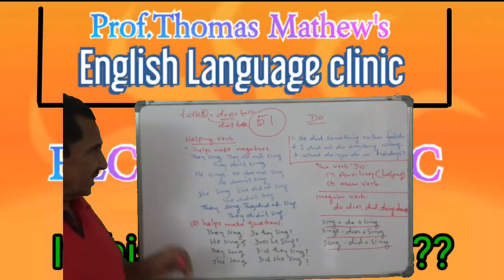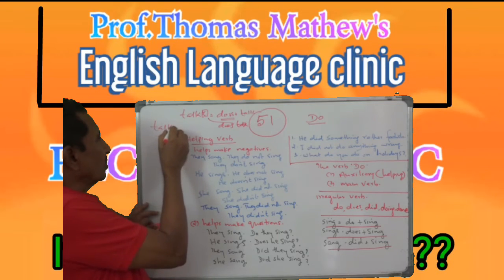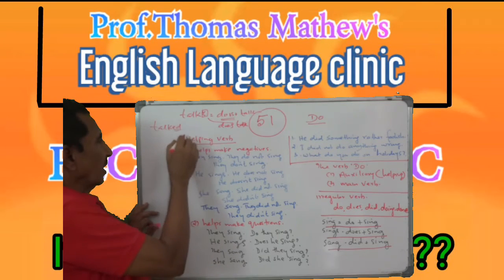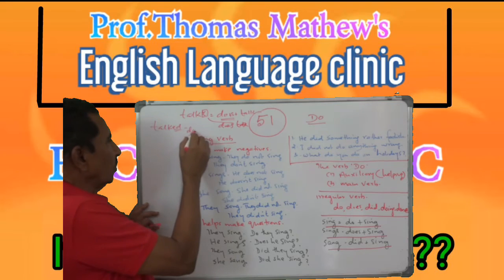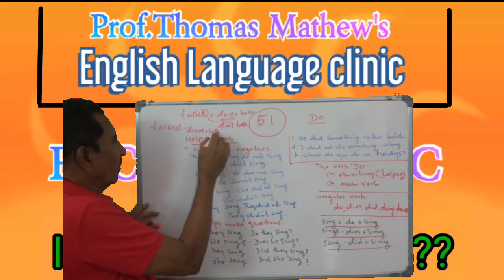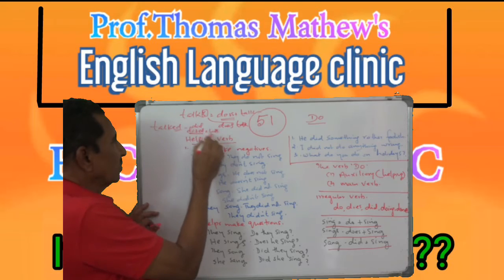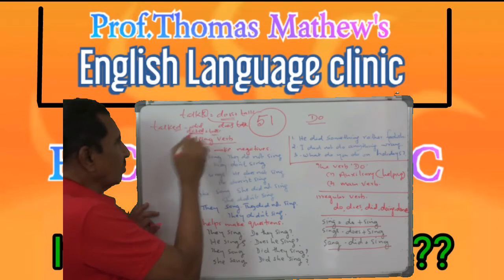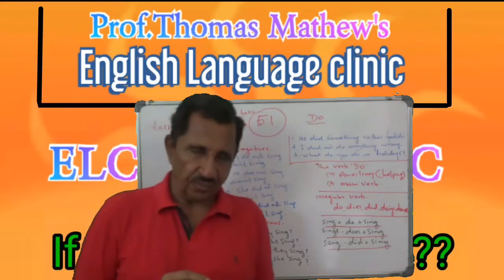Then another is 'did.' Instead of 'sang,' let us say 'talked.' '-ed' is the past tense marker. So you have 'do' plus '-ed' plus 'talk' — together that gives 'did talk,' not 'did talked.' I think it is now very clear to you.